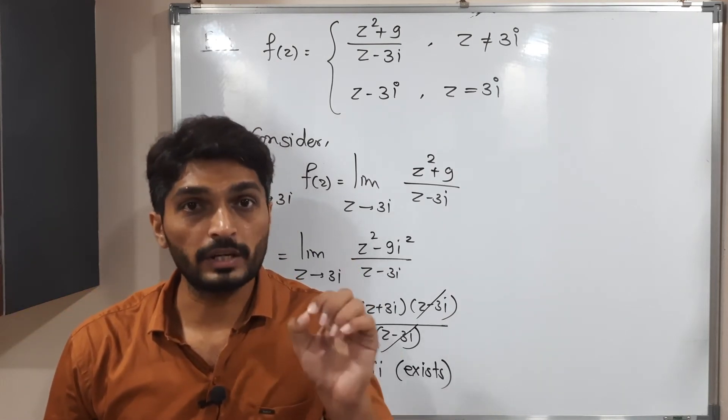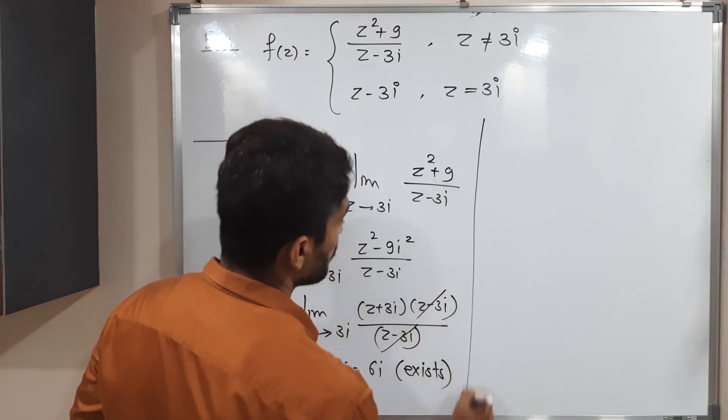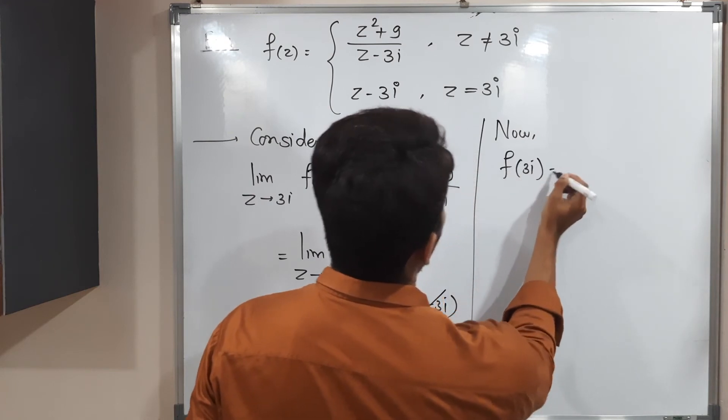After that, the second condition, we are supposed to find f of 3i. That value should exist. Let us work on it. So now, f of 3i, let us find its value.